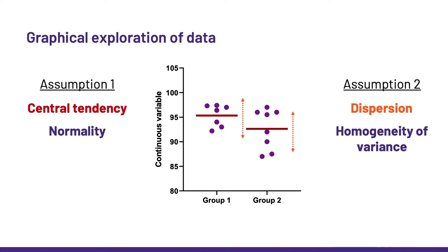Of course, we can apply parametric tests on badly behaved data, and they will give a p-value, but not one that could be trusted. The bottom line is, if we give dodgy data to a statistical test, it will give us back a dodgy p-value.